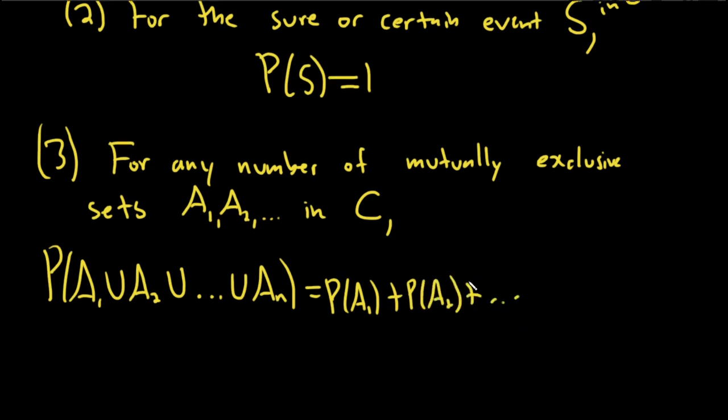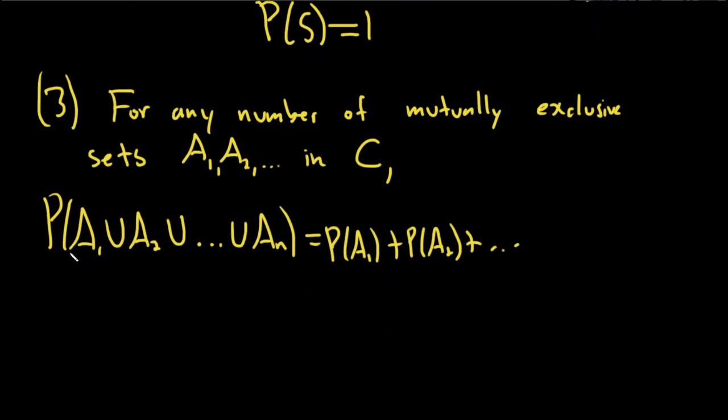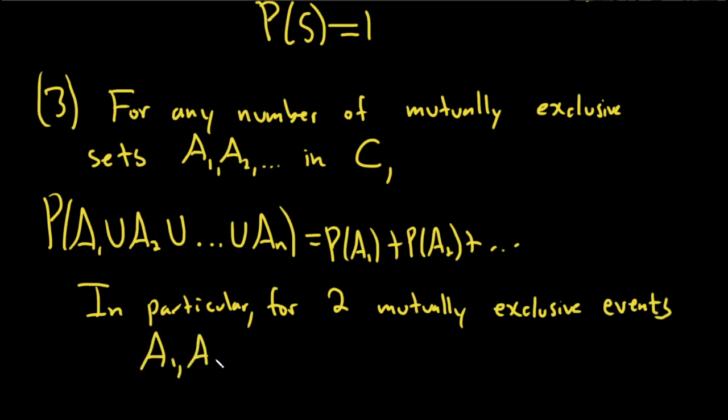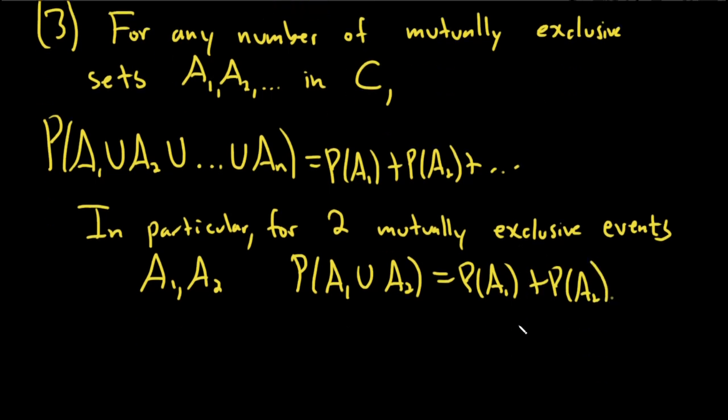Really nice. In particular, for two mutually exclusive events, say A one and A two, we have P of A one union A two is equal to the sum P of A one plus P of A two. And that will be that.